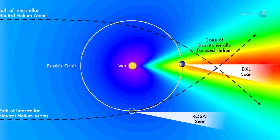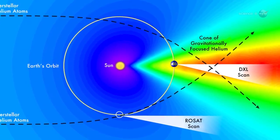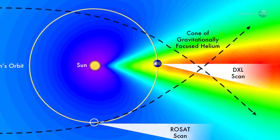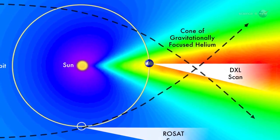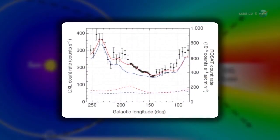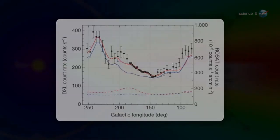The results, published online in the journal Nature on July 27, indicate that only about 40% of the soft X-ray background originates within the solar system. The rest must come from a local bubble of hot gas, the relic of ancient supernovas.